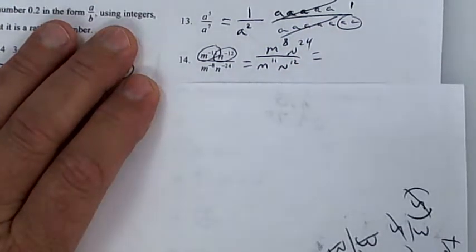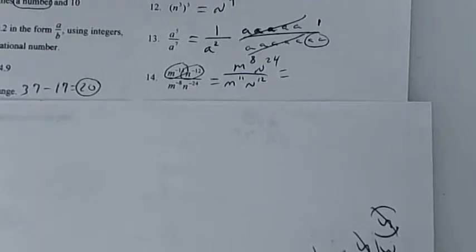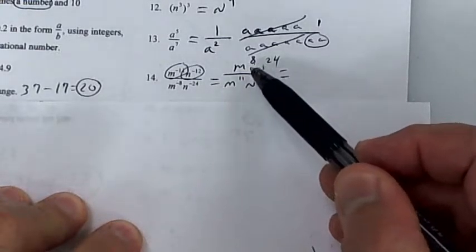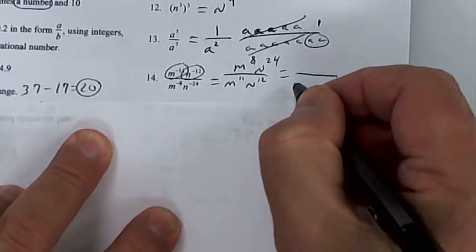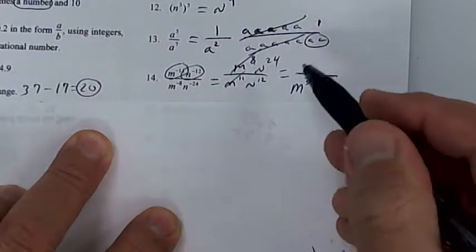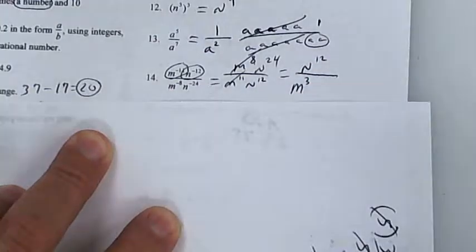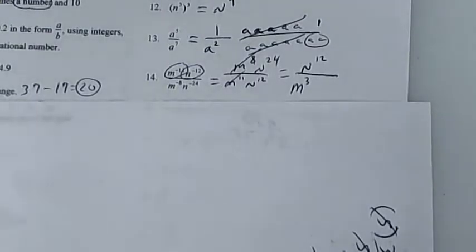Do I have more m's at the top or bottom? How many more at the bottom? Put three. Do I have more n's at the top or bottom? You could expand it out but these are kind of big — everybody clear on that concept?